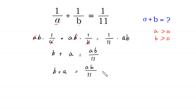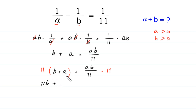We multiply both sides of this equation by 11. At the left side, 11B plus 11A is equal to — this 11 cancels with this 11 — and at the right side, AB.